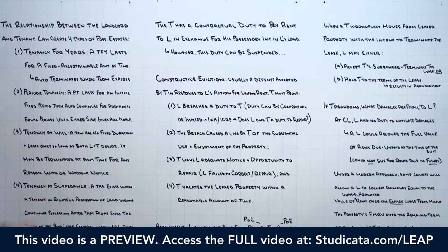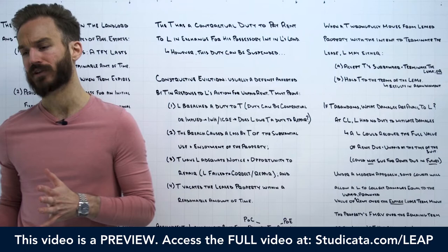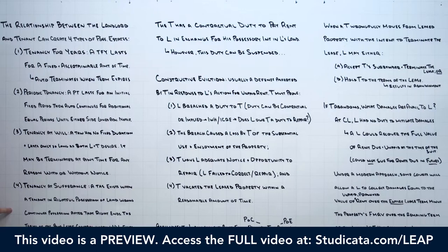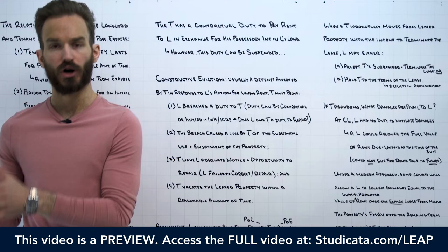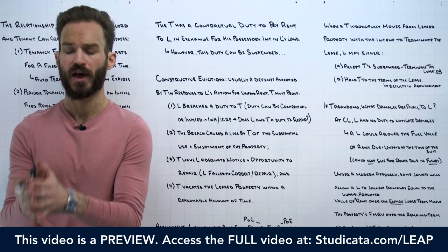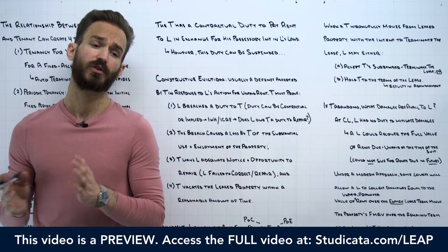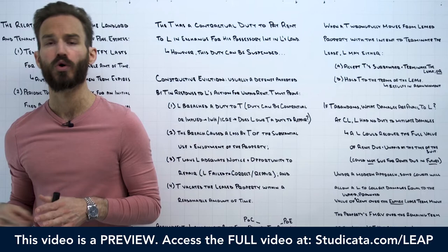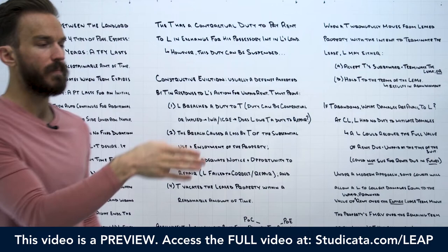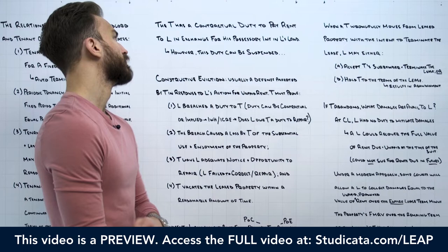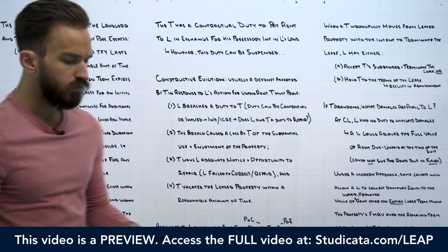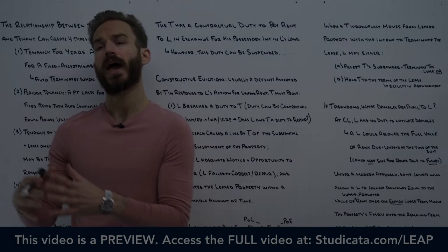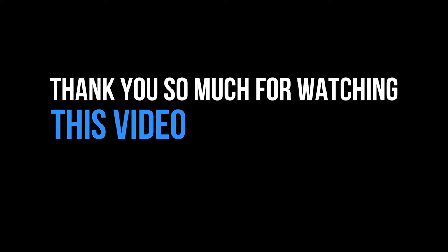Step one in a landlord-tenant analysis is always to properly classify the relationship as either a tenancy for years, periodic tenancy, tenancy at will, or tenancy at sufferance, because this affects how the tenancy is terminated. Once that landlord-tenant relationship is terminated, the obligations of both parties are discharged — the tenant's duty to pay rent is discharged, and whatever duties the landlord owes to the tenant are also discharged. It's very important to classify correctly so we can identify the exact moment those duties are discharged. The next step is to clearly define what those duties are — what the tenant owes the landlord and what the landlord owes the tenant.